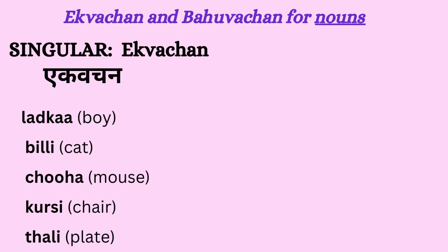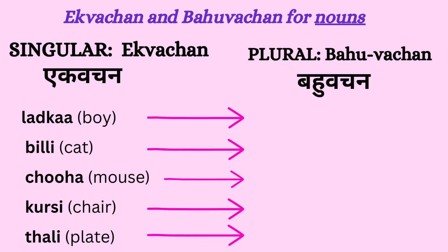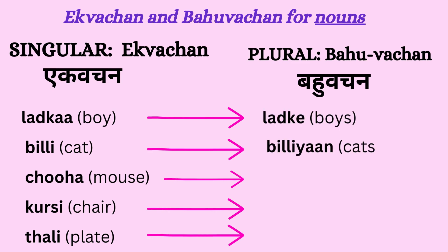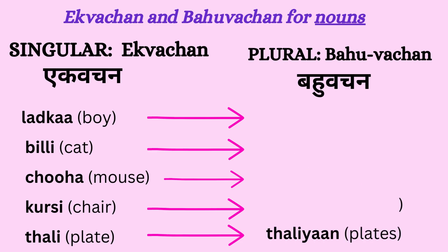Plural is known as bahuvachan. Bahu means many. It refers to more than one person, animal or thing. For example: ladke, billiyaan, chuhe, kursiyaan, etc.